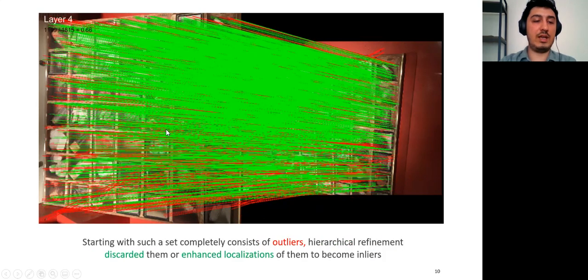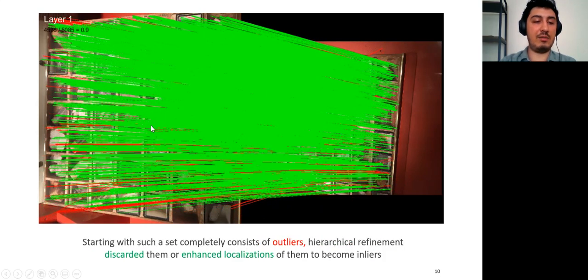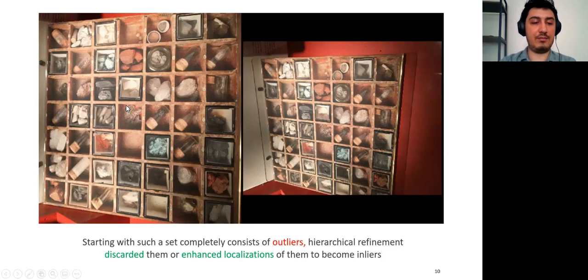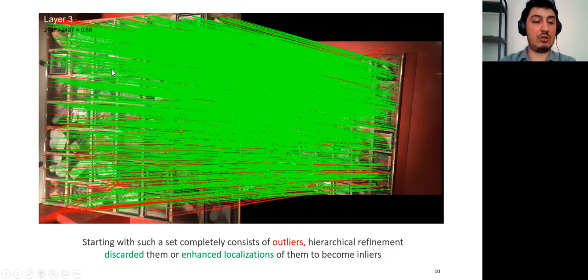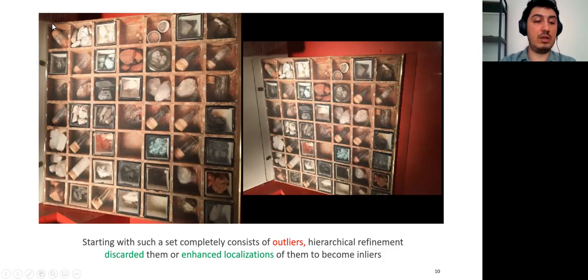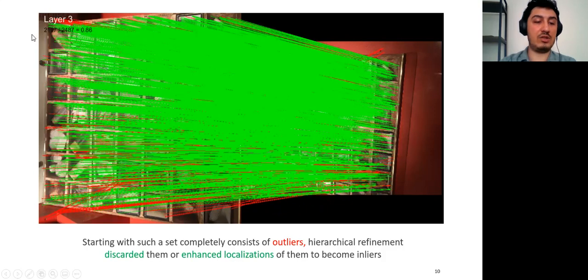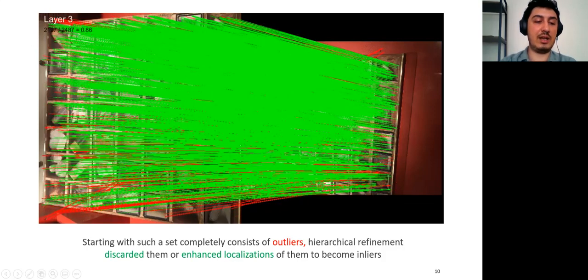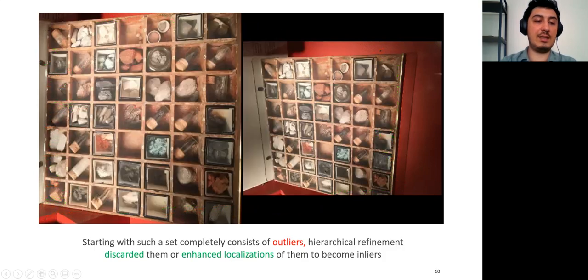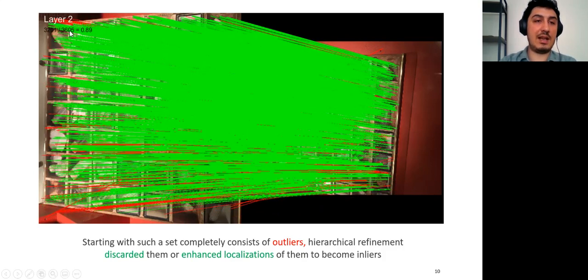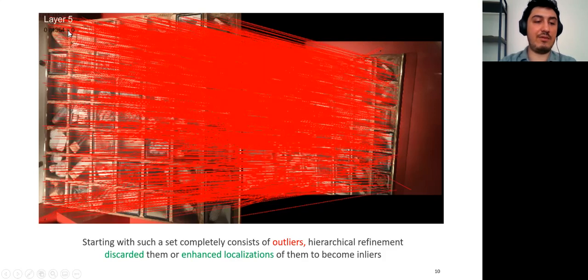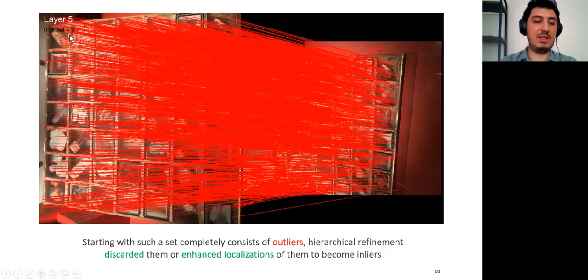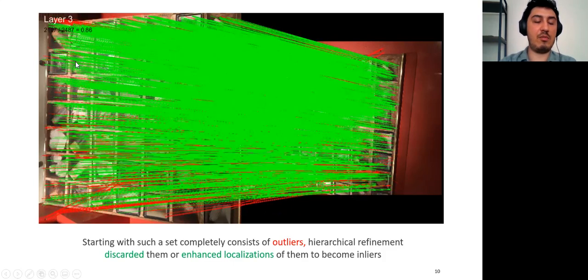Also here, you can see how the hierarchical refinement deals with outliers that are coming from DNSS at the last layer. Starting with such an outlier set that consists of poorly localized or complete failure matches, it is still able to find good matches, either discarding the outliers or enhancing their localizations. Even if it starts with zero accuracy, DFM accomplished the task with 0.9 accuracy. And besides, it increased the number of matched features.